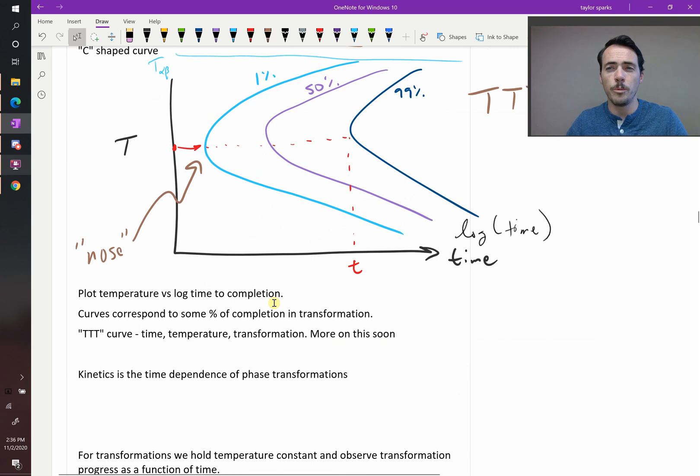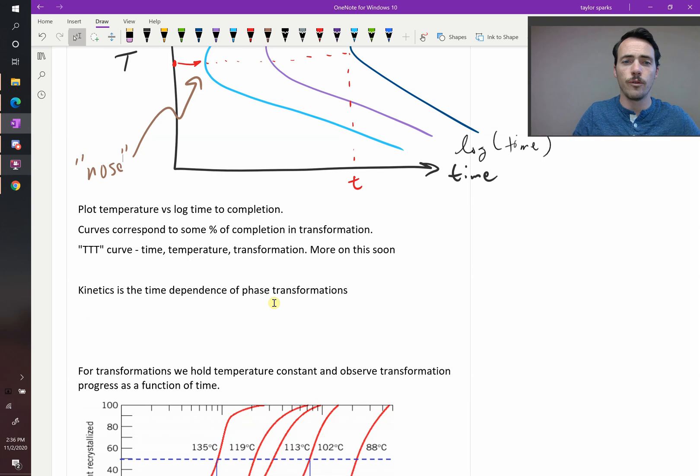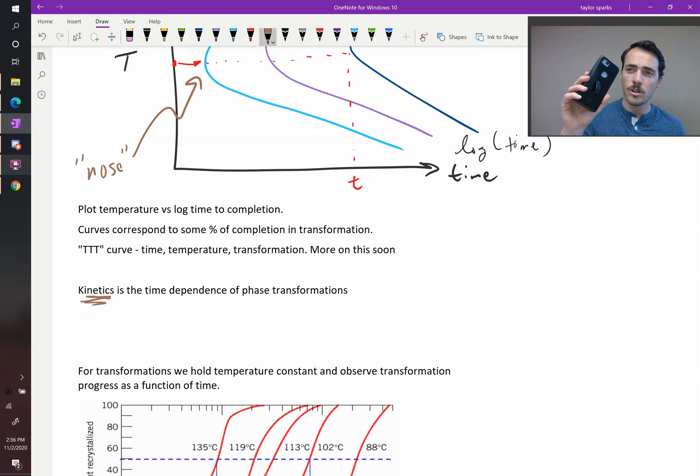Now, what would be useful for us is to quantify the rate at which these reactions take place, and that is essentially the whole field of kinetics. Kinetics in material science is the study of this time dependence of phase transformations. How quickly can things shift from one phase to another? And that matters for lots of stuff. How quickly the phone in your battery can discharge is going to depend on how quickly those electrochemical reactions can take place, and many other examples why we care about this.